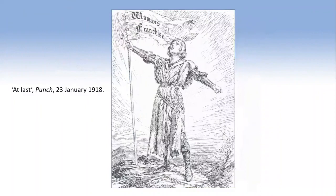Whatever conclusion you come to, we know that partial enfranchisement of women came in 1918, and that process was completed finally ten years later in 1928. From 1928 onwards, all women over the age of 21 were enfranchised on exactly the same basis as men over the age of 21. Thank you very much for listening — I hope this gives some taste of the types of things I do on my modules and that we in the department teach. Goodbye.